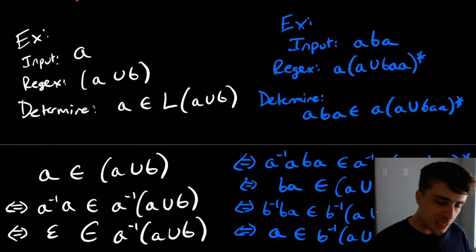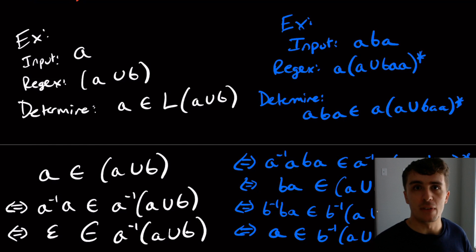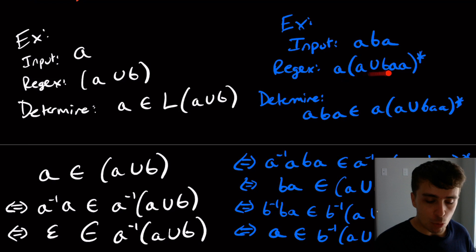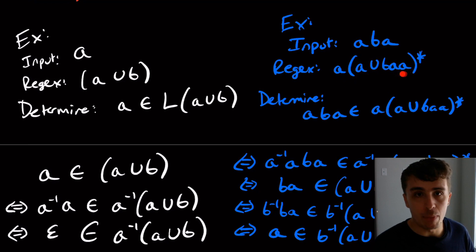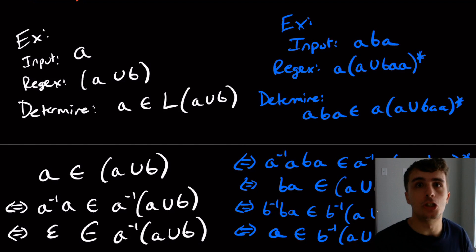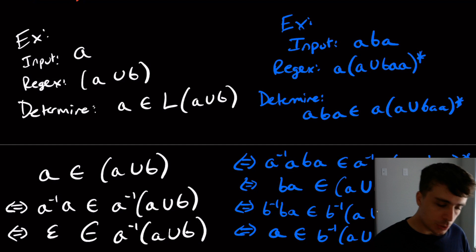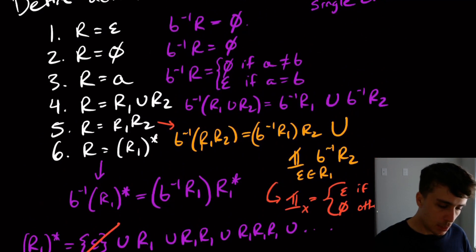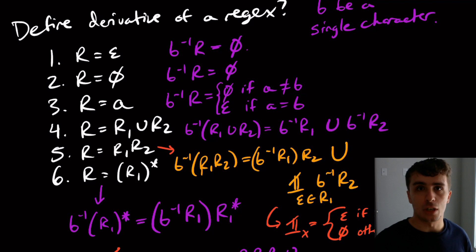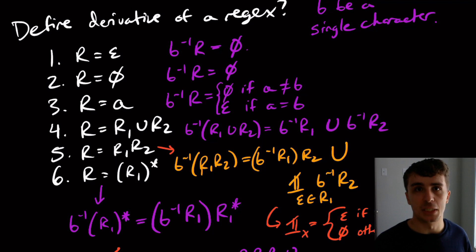Using Brzozowski derivatives, we were able to show how to determine whether a string can be generated by a regular expression without having to convert the regular expression into an automaton first. I think that's pretty cool. If you have any thoughts or comments, please put them below. There are links in the video description to support the channel. Please like and subscribe — it really helps us out. I'll see you next time.